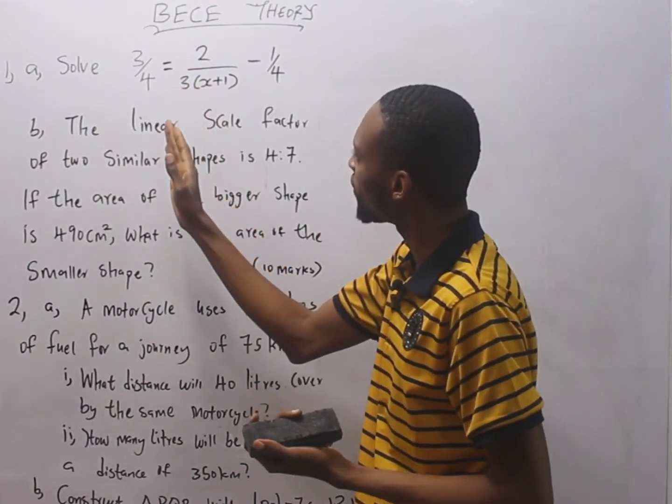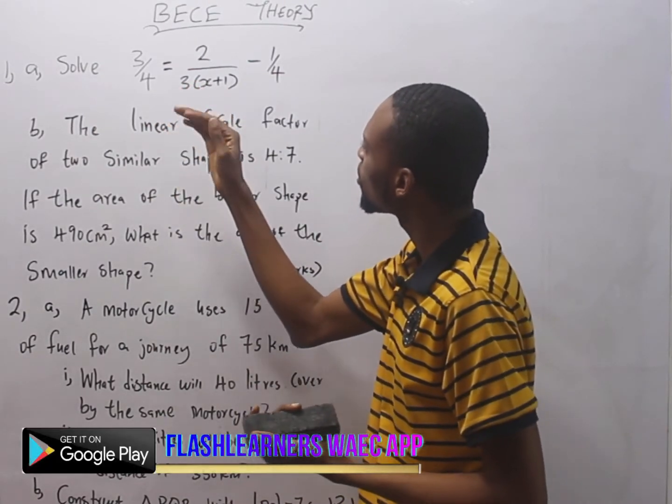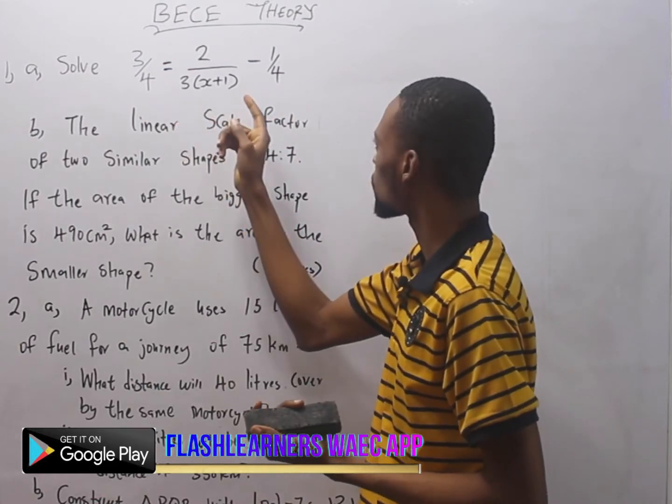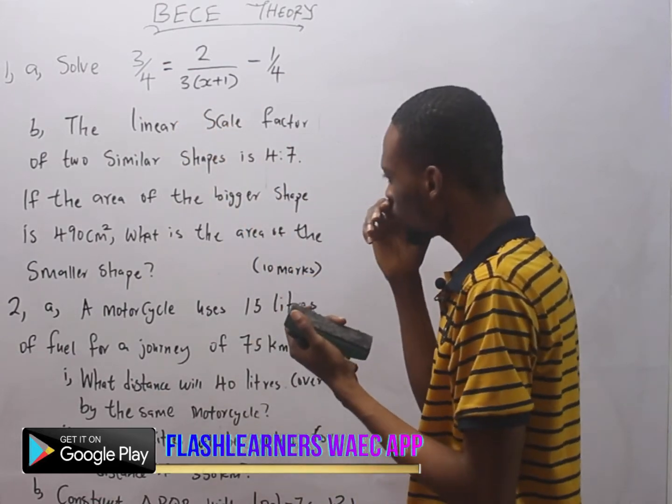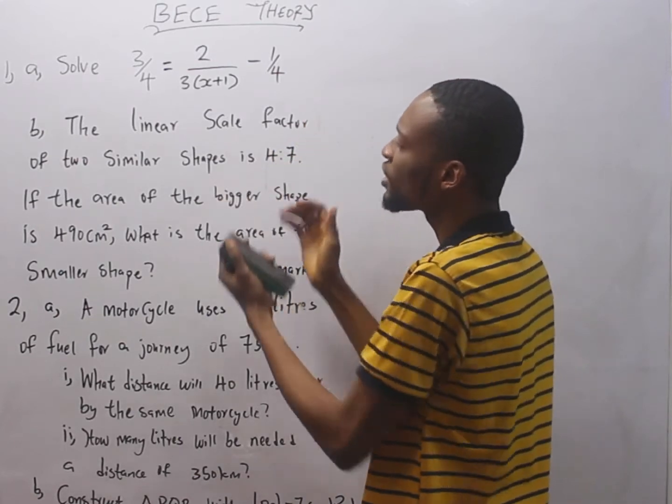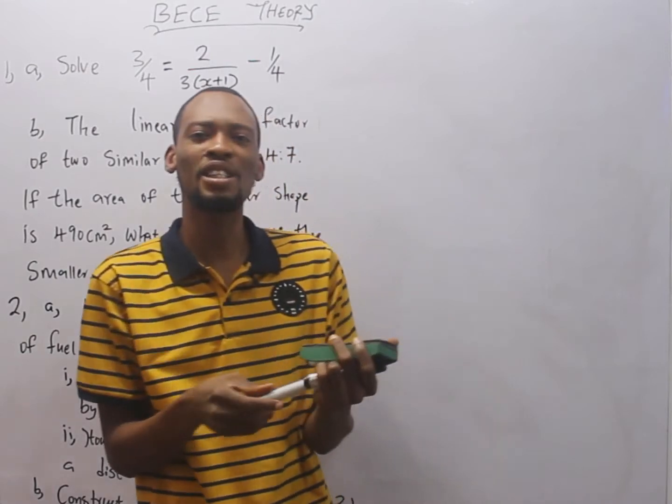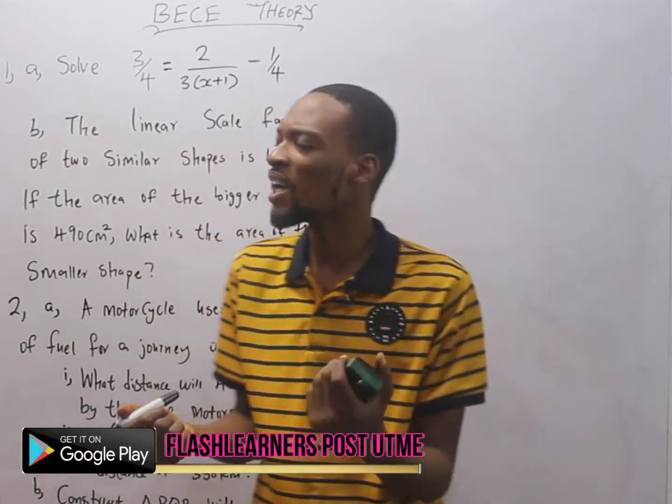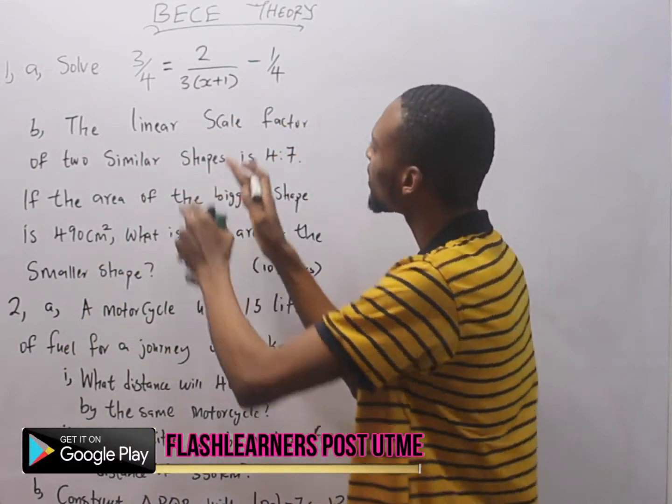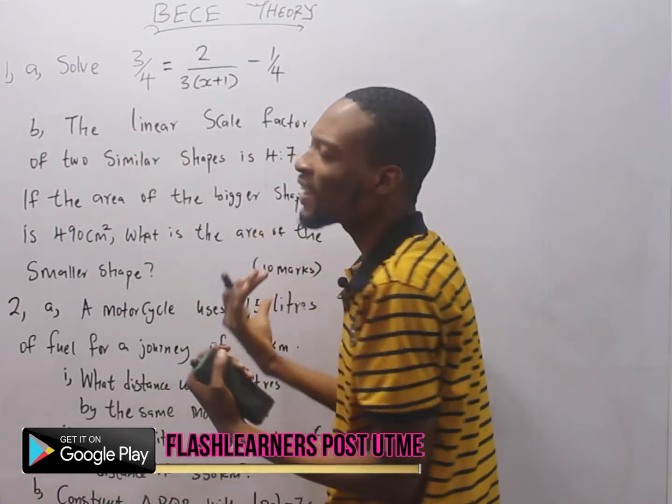Solve 3 over 4 equals 2 over 3s plus 1 minus 1 over 4. This is an equation. There is difference between equation and expression. When you are given values separated by equal to, we call that equations.